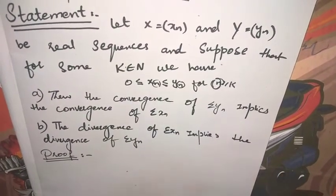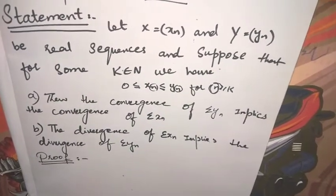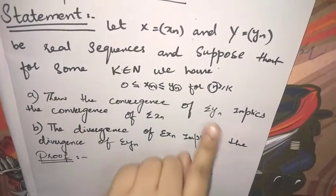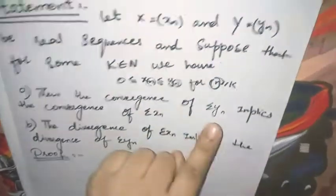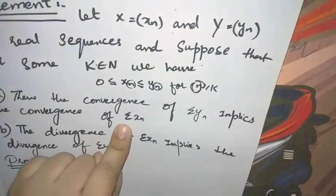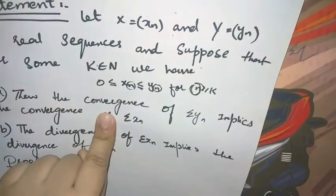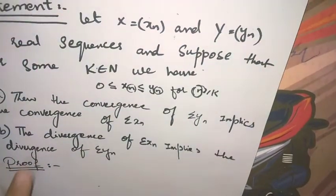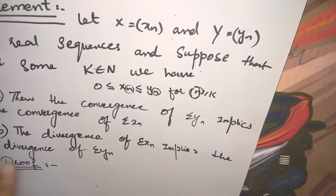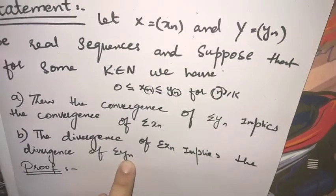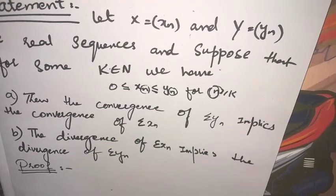In this whole criteria, we need to understand that if the big series is converged, then the small ones will also converge. But if the small ones are diverged, then the big series will also diverge.